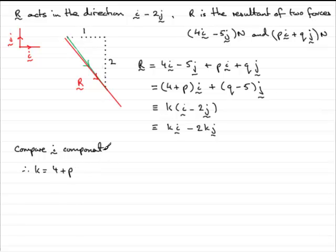And if I compare the j components, what do I have? Well, I've got minus 2k must be the same as q minus 5. So I can put that in as minus 2k equals q minus 5.